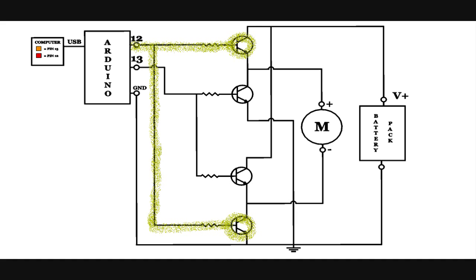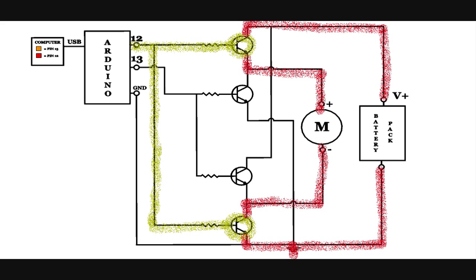Now the current passes through the first on transistor, to the motor, to the second on transistor, to ground, completing the circuit. Note the direction of the current through the motor.